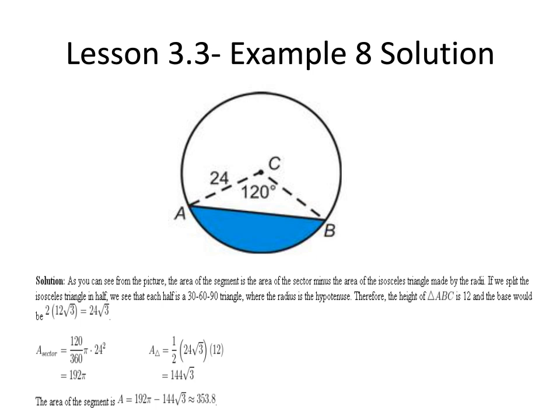30-60-90 triangles where the radius of the circle is the hypotenuse, the height of triangle ABC is 12, and the base would be 2 times 12 times the square root of 3.